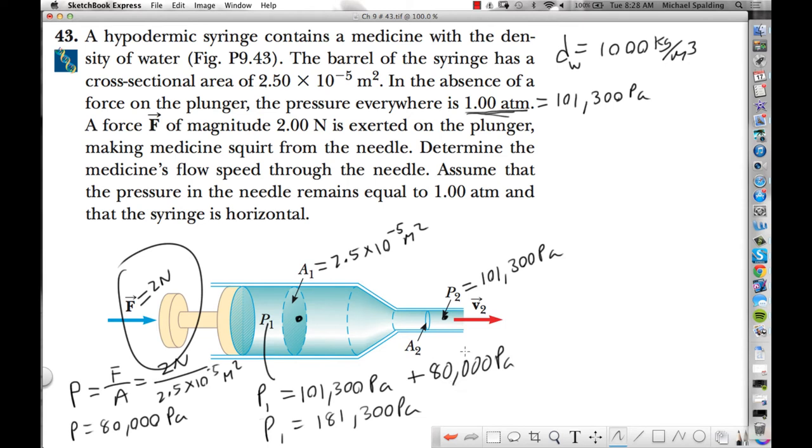And I think we have all the info we need. So the question is this: Determine the medicine's flow speed through the needle. So what we're looking for is V2.